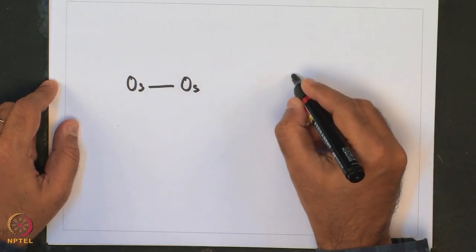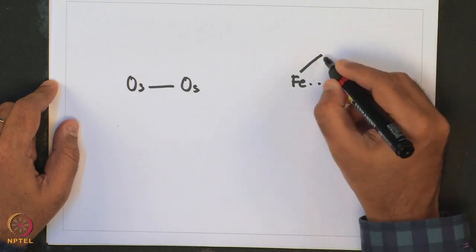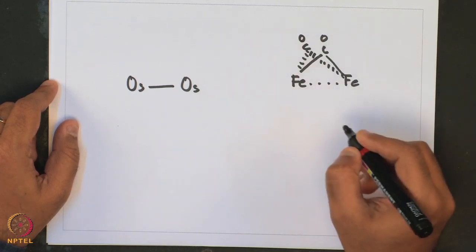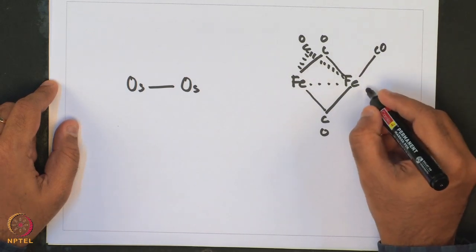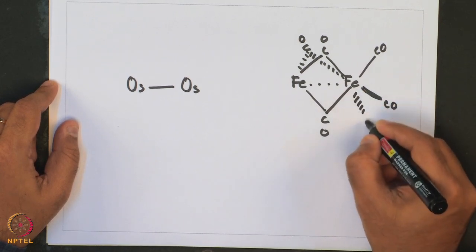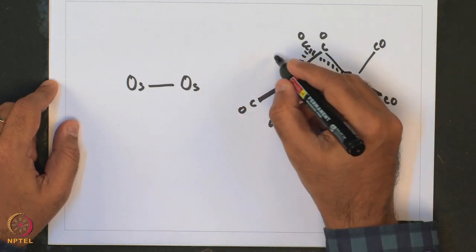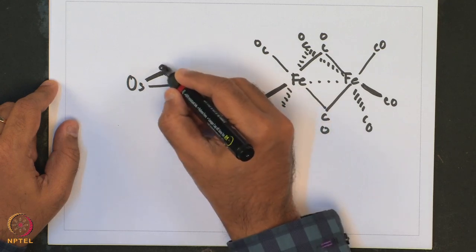Continuing that discussion, we look at some structural features of Transition Metal Carbonyl Complexes. For example, in Diosmium 9 Carbonyl there is a single bridging carbonyl, whereas for the iron analogue there are three bridging carbonyl moieties. This difference is ascribed to the small size of iron as opposed to osmium. So iron contains three bridging carbonyls and osmium contains a single bridging carbonyl.